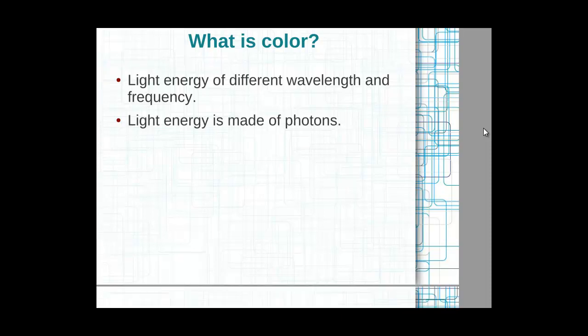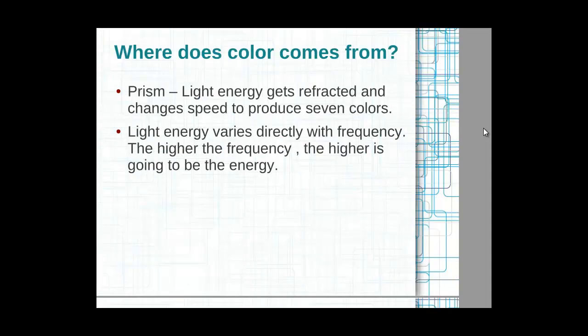Light energy is made up of photons. Now where does color come from? I classify these as two sources: first is a prism, and second is light energy. If you take a prism and strike some light on it, it will be refracted — meaning a change of speed. Since v = f·lambda, a change in speed means a change in frequency or wavelength, and different wavelengths give rise to different colors.